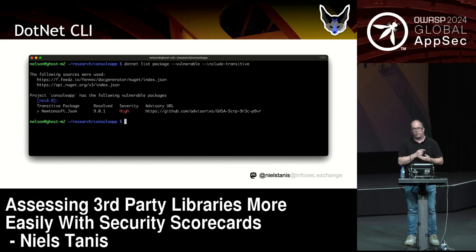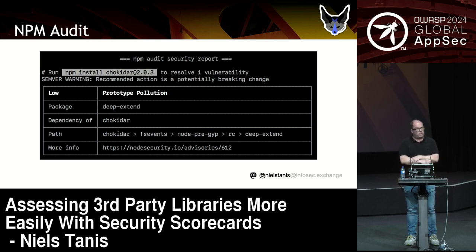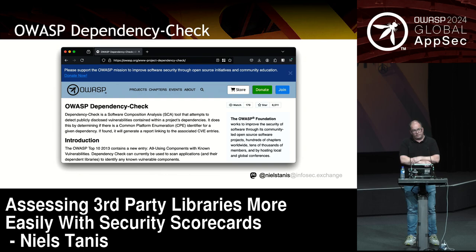Make sure you include the transitive ones. By default it's not transitive, but I think with .NET 9 this will be the default on a build, and it will even break the build if you have certain high vulnerabilities. We can do the same with NPM — NPM audit does the same and shows you what's wrong. And because we're at an OWASP conference, we can always use the dependency check as well to get known vulnerabilities surfaced.